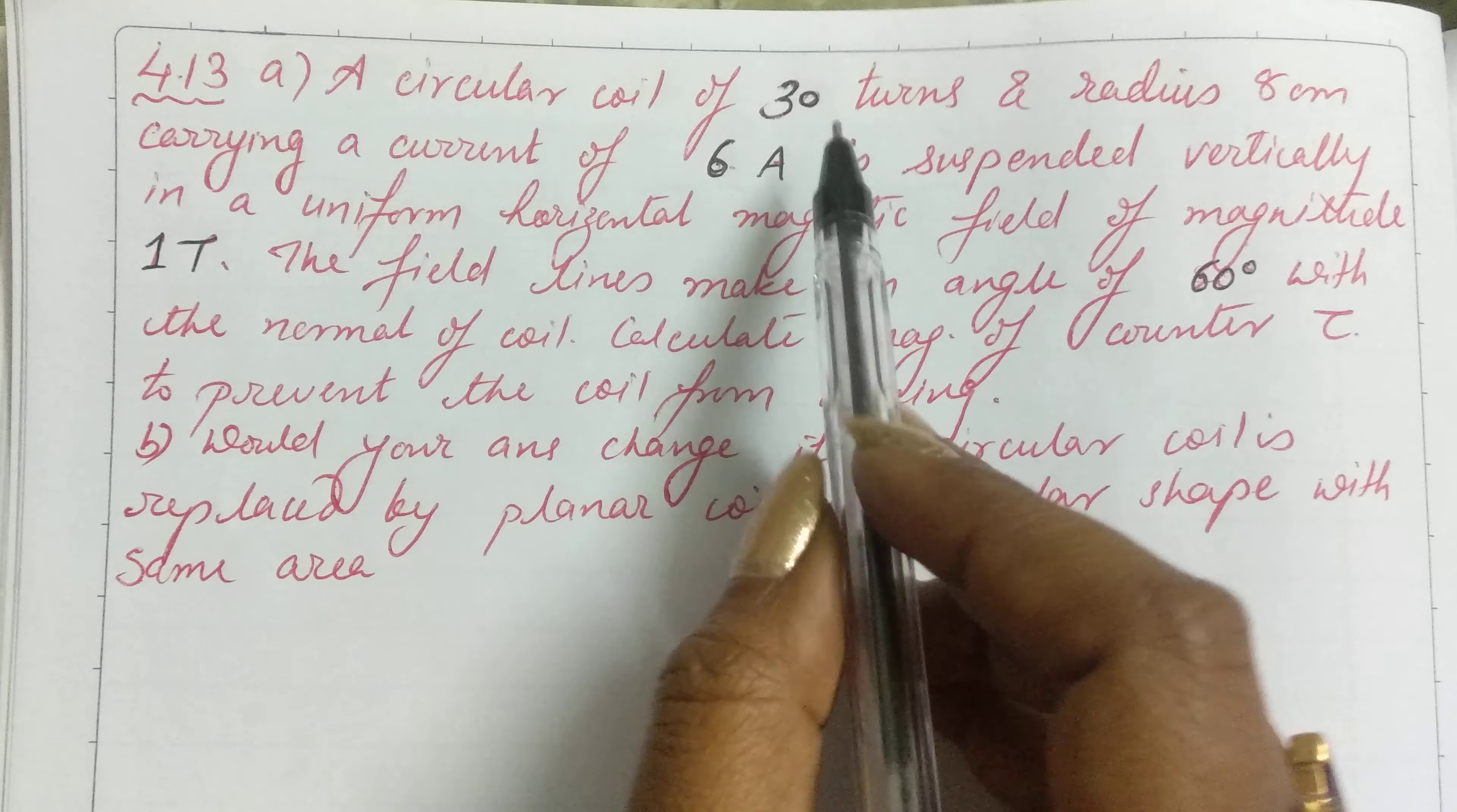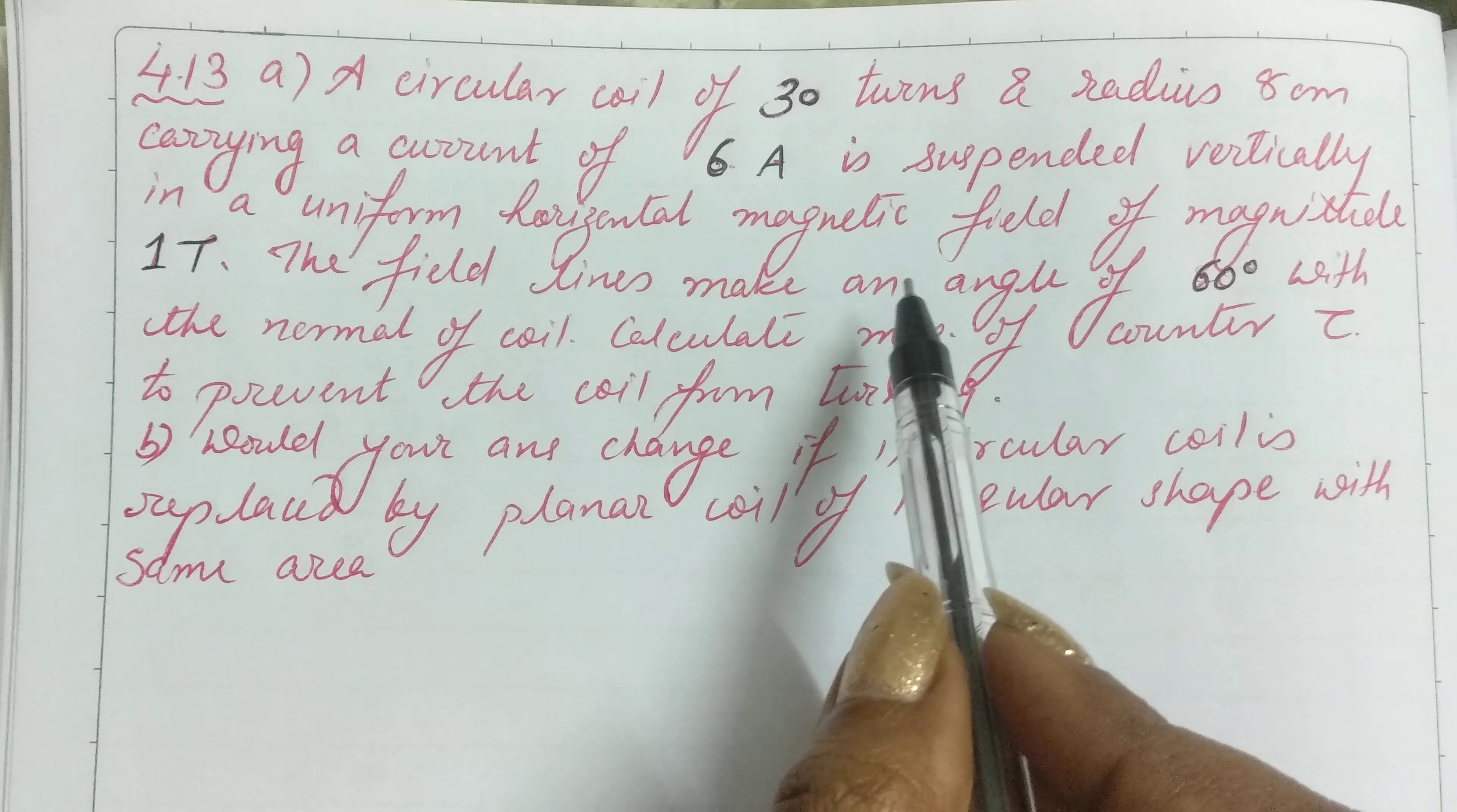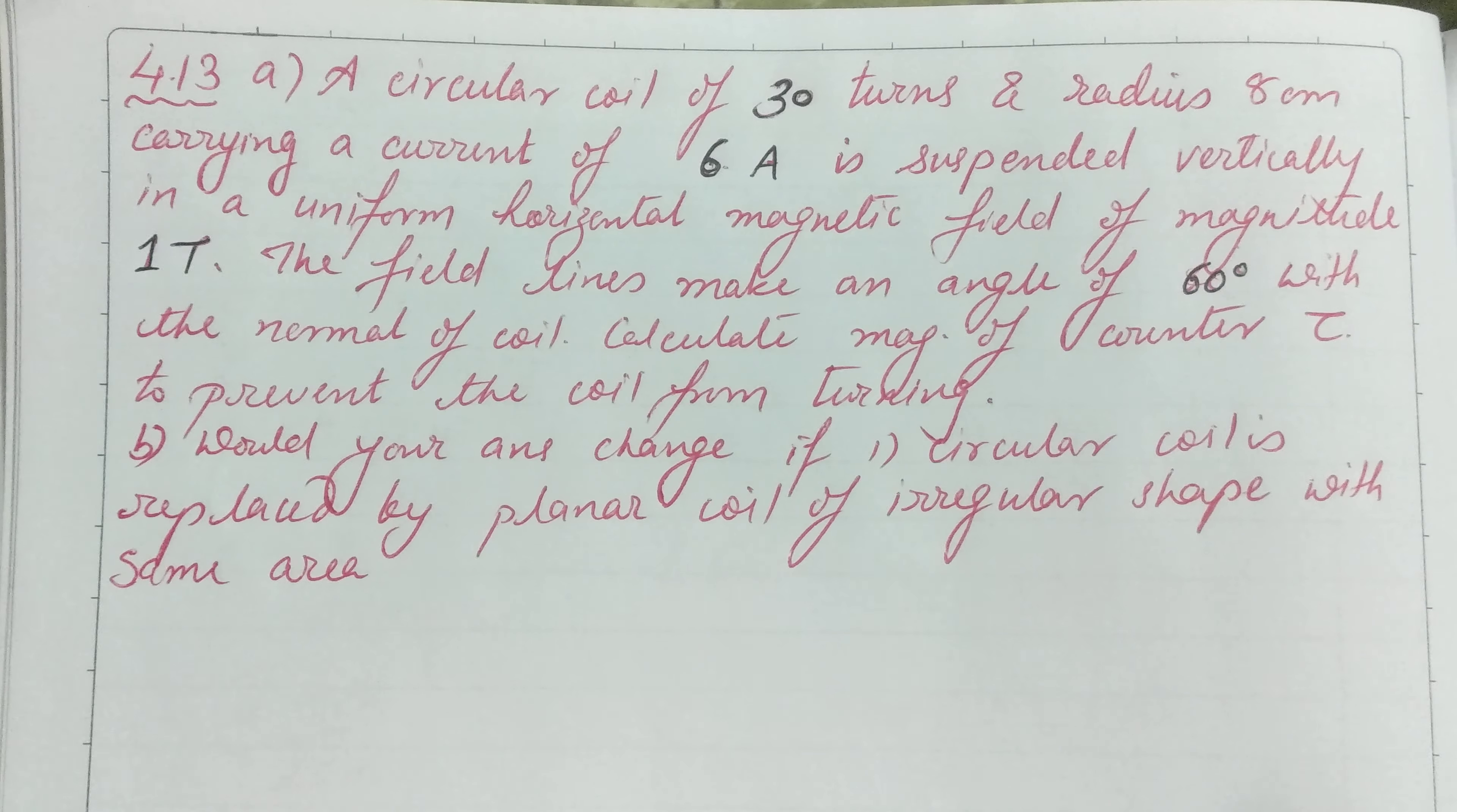In this question, we have a current-carrying coil placed in a uniform horizontal magnetic field. The normal to this coil makes a 60-degree angle with the uniform magnetic field.